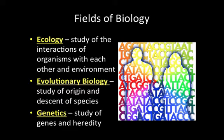Evolutionary biology is the study of the origin and descent of species — we're talking about evolution and natural selection, and we'll detail that more later. Genetics is the study of genes and heredity. You've probably done Punnett squares before and know about different traits and how they're passed on. Genetics is the study of that, and it gets a little more confusing, but it's fun.